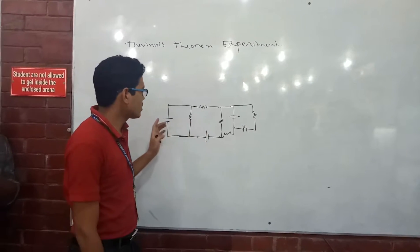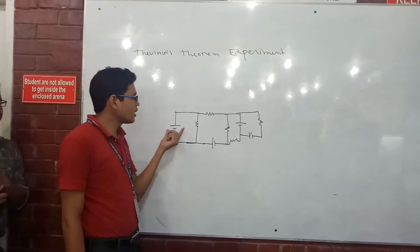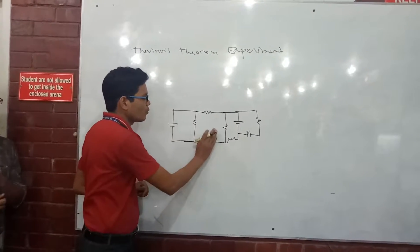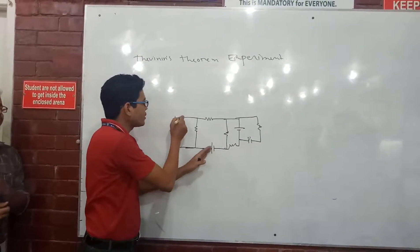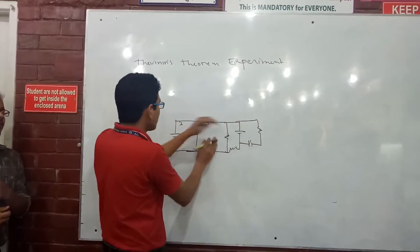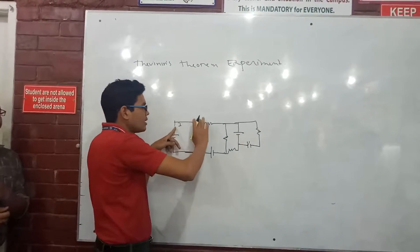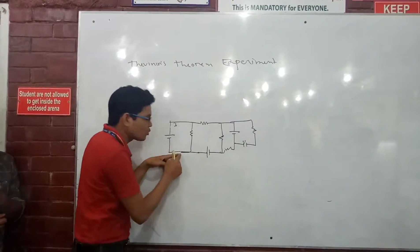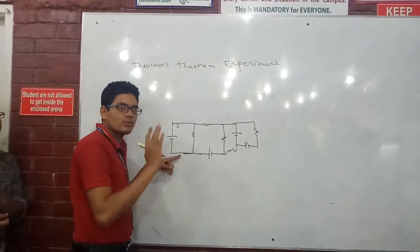Finding the total current will be difficult. If we have only one source, the current starts from here, gets divided into parallel branches, and comes back as total current. That's what happens when you have only one source.